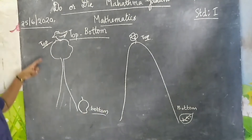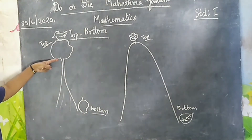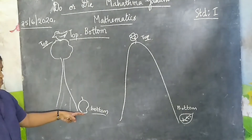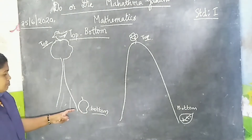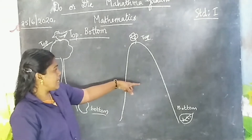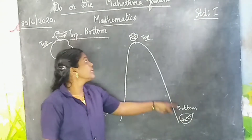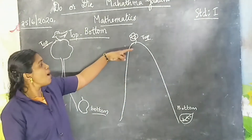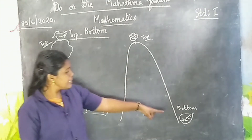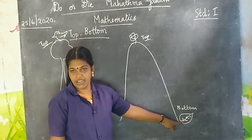Once more. This bird is on the top of this tree and mango is at the bottom of this tree. Flower is at the top of this hill and leaf is at the bottom of this hill.